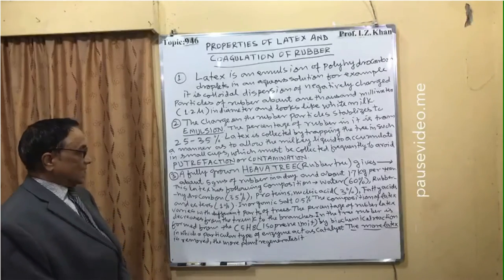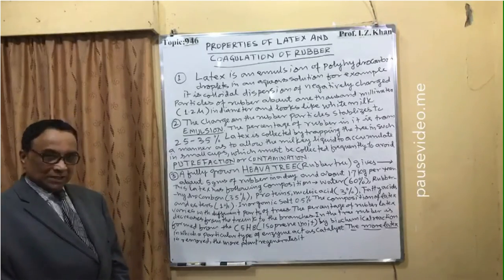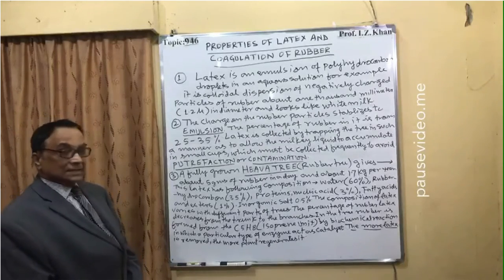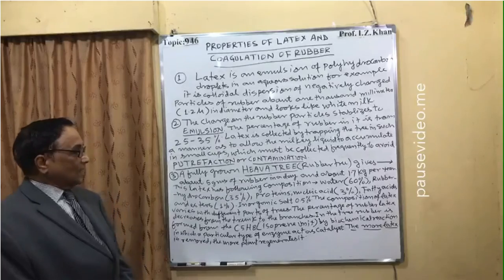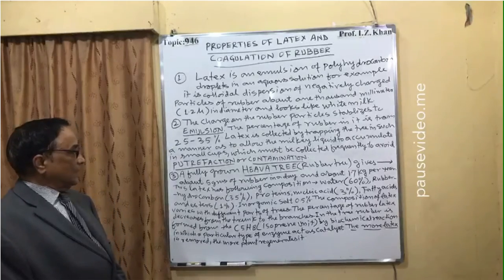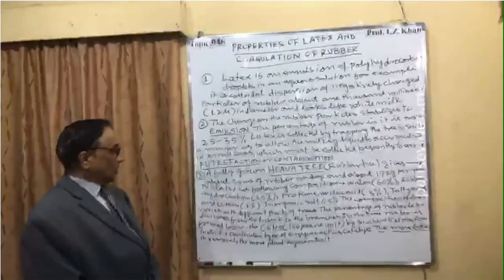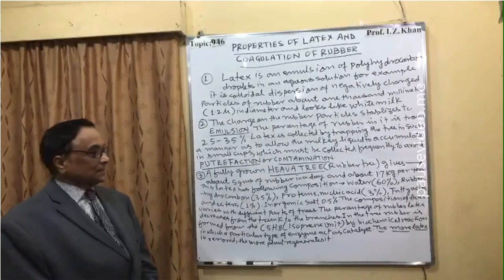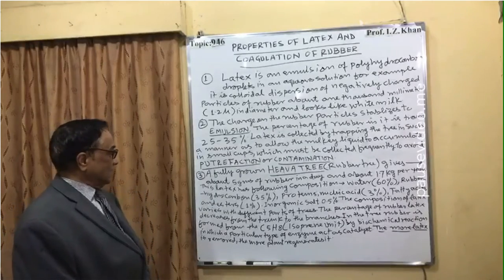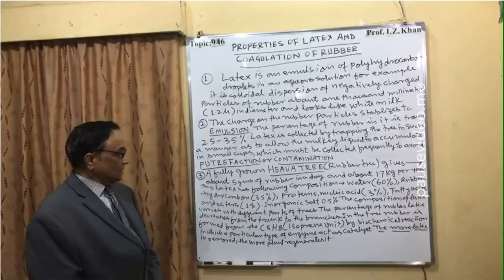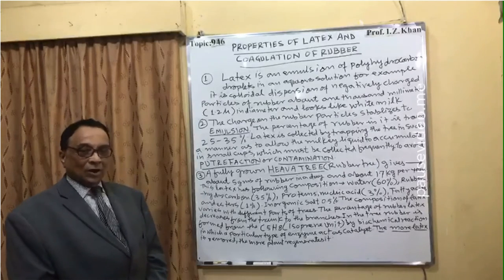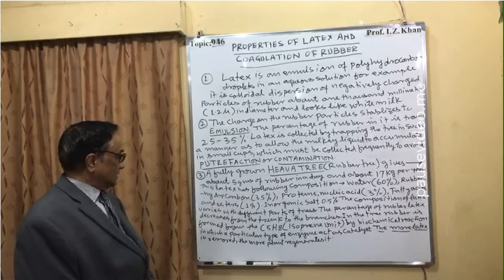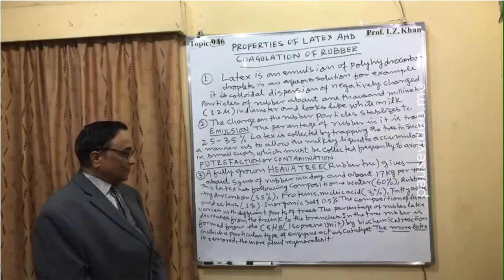This latex has the following composition: water 60 percent, rubber hydrocarbon 35 percent, protein and nucleic acid 3 percent, fatty acids and esters 1 percent, inorganic salts 0.5 percent. The composition of latex varies with different parts of the tree. The percentage of rubber in latex decreases from the trunk to the branches.